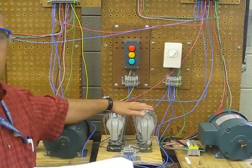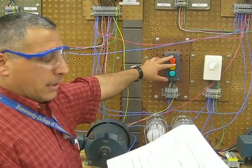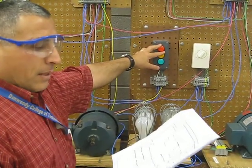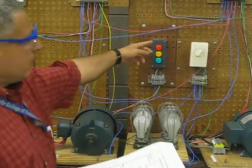We'll be simulating the solenoids with lights, and we do have indicating lights to indicate that the compressors are running, the condenser fan, as well as the supply fan are running with these red, yellow, and green lights.